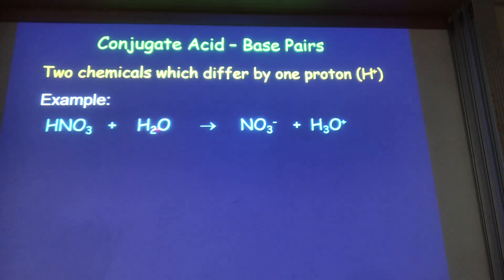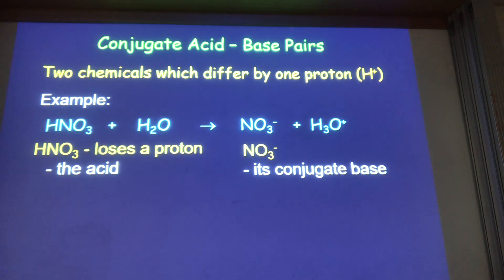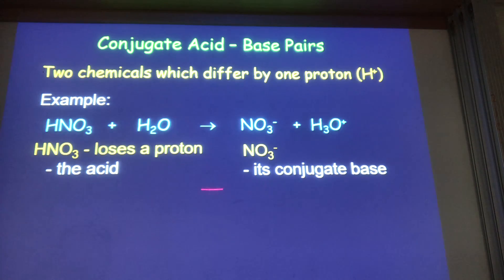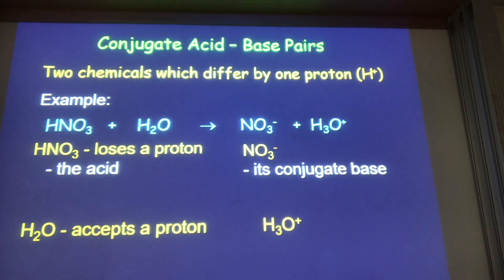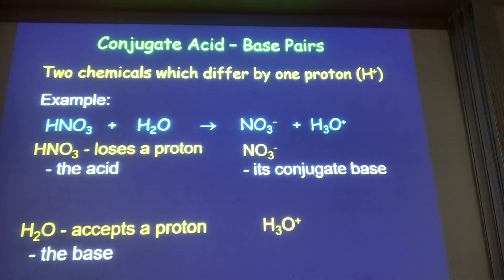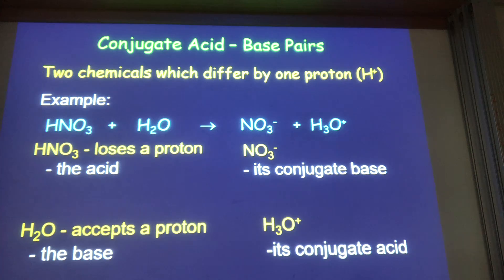Water is acting as a base — it's accepting a proton. Nitric acid turns into the nitrate ion, and the nitrate ion is said to be its conjugate base — it's what nitric acid turns into when it loses its proton. Water is the base; it accepts a proton and turns into the hydronium ion, so the hydronium ion is water's conjugate acid.